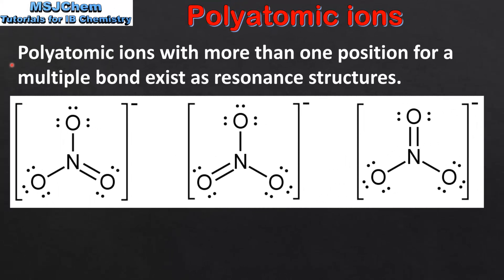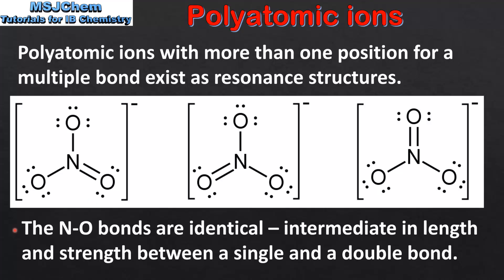Polyatomic ions with more than one position for a multiple bond exist as resonance structures. Here we can see the three resonance structures of the nitrate ion. Each resonance structure differs by the position of the nitrogen-to-oxygen double bond. However, the nitrogen-to-oxygen bonds are identical — they are intermediate in length and strength between a single and a double bond. Resonance structures will be covered in more detail in a later video.